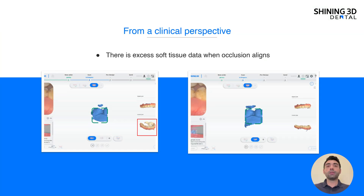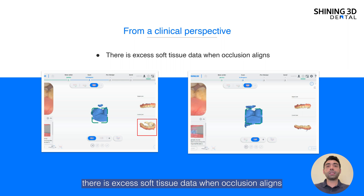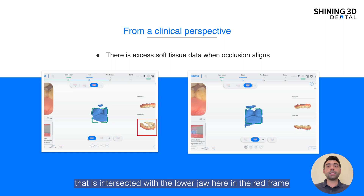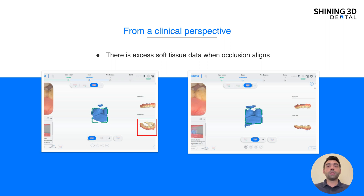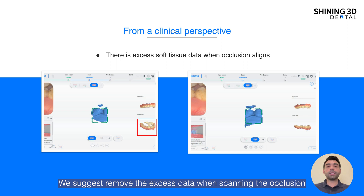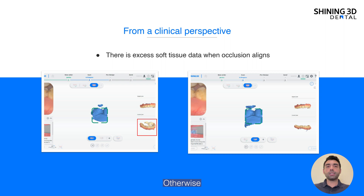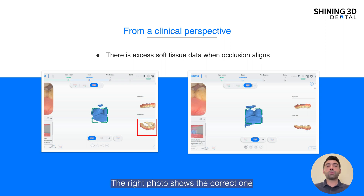Fourth, there is excess soft tissue data when occlusion aligns. The left side photo shows upper jaw information that is intersected with the lower jaw, shown in the red frame. We suggest removing the excess data when scanning the occlusion, making sure there is no interference during the process. Otherwise, it will affect the occlusion accuracy. The right photo shows the correct result, where the data is clear when scanning the occlusion.